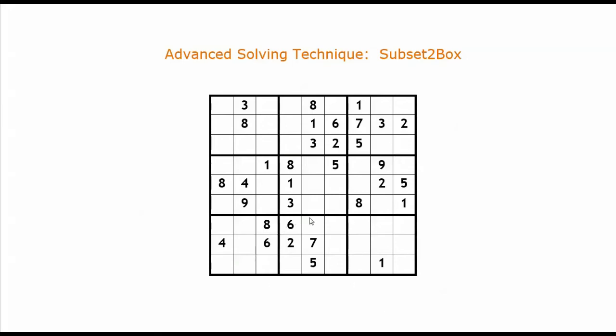For example, in the eighth mini box, we have five empty squares. Let's write down the candidate numbers for these squares. For this square, it cannot be one, two, or three because these numbers already appear in the fourth column. It can be four. It cannot be five, six, or seven because these numbers already appear in its mini box. It cannot be eight because it already appears in its column, and it could be nine.